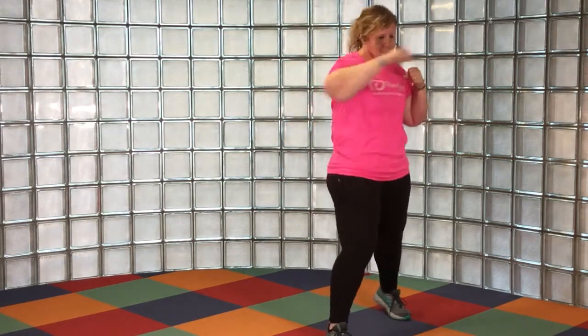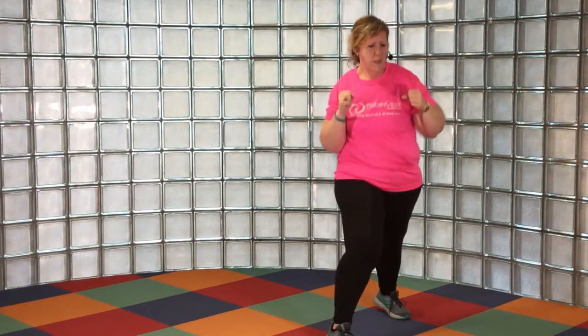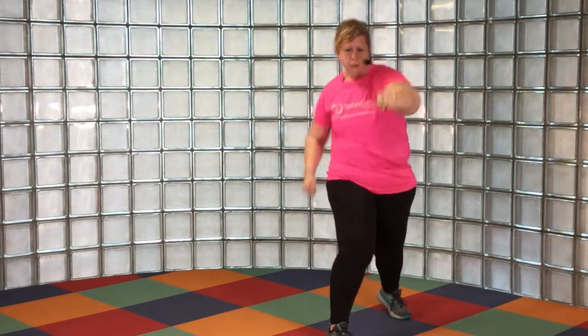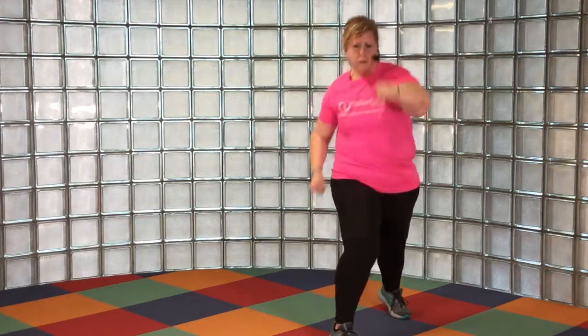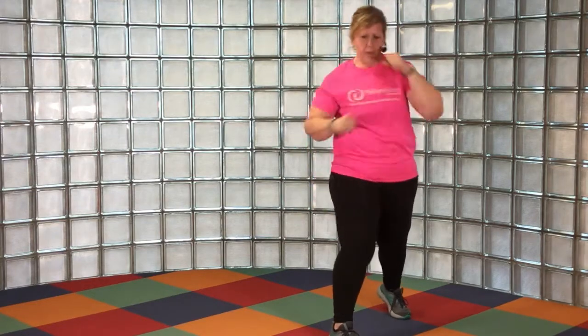We're going to add on. So we've still got the jab and cross. Now we're going to do uppercut. Basically knuckles up to their chin. Back to the left side. Ready? Let's go. Jab, cross, upper. Again, you can do it slow or fast. Halfway. Five seconds. Almost there. And time.